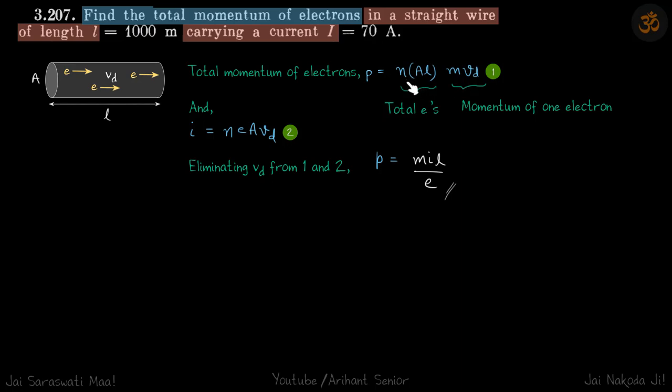You can see already there is a term of current coming here. So we know current is n e A V_D. We'll just eliminate V_D from these two equations because everything else is known to us. And that gives momentum is m I L by e. Our answer.